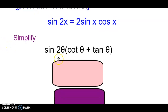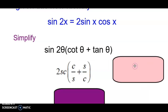Let's simplify sine of 2θ times cotangent plus tangent. Remember, when we're simplifying we want to try to change everything into terms of sine and cosine if possible. We're going to substitute in our new identity — 2 sine cosine — and we have to decide what to put in for cotangent and tangent. We'll use cosine over sine for cotangent and sine over cosine for tangent.